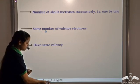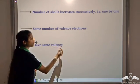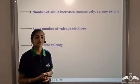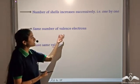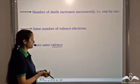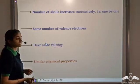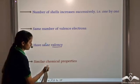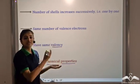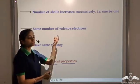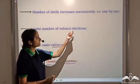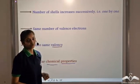They have the same valency. Valency is the number of electrons lost, shared, or gained to complete the octet in the valence shell. Since these elements have the same number of valence electrons, therefore they have the same valency. They also have the same chemical properties, because chemical properties depend on the electrons present in the valence shell.